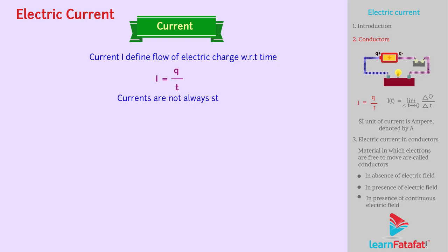Also, currents are not always steady. Hence, it is defined at any particular instant of time as I(t) equals delta Q by delta t, where the limit delta t tends to zero.